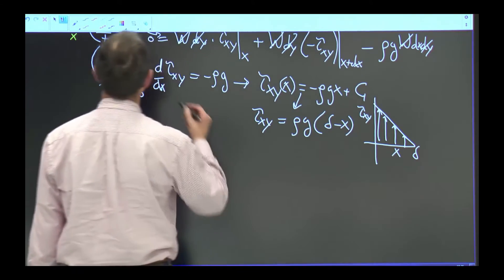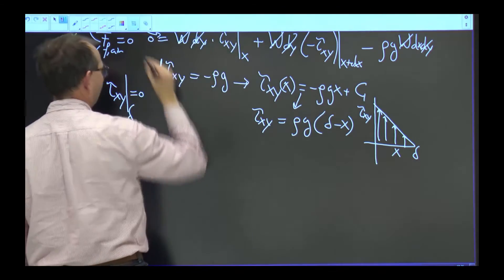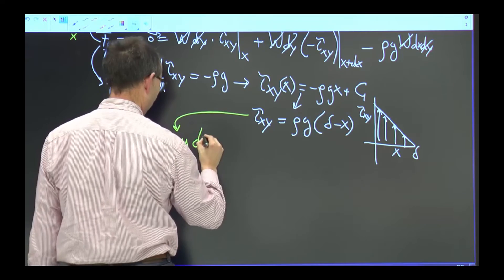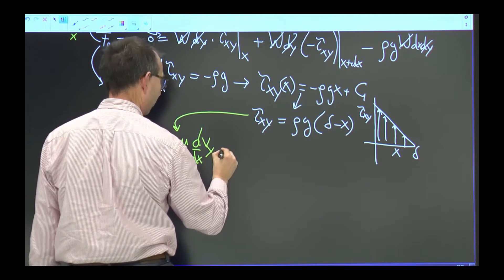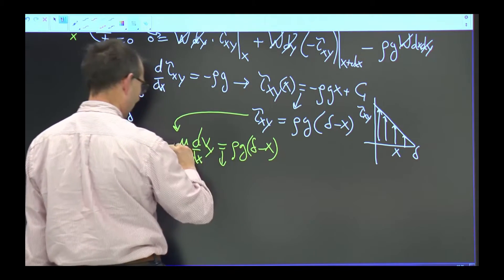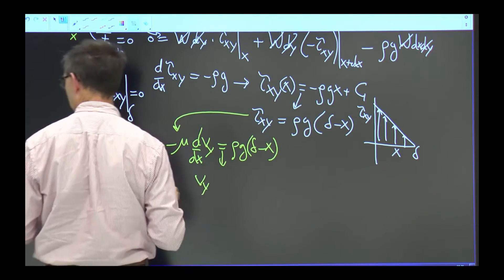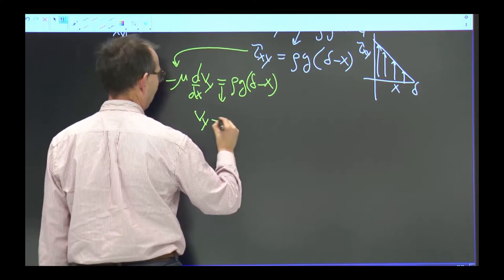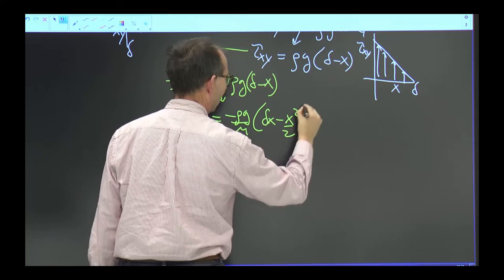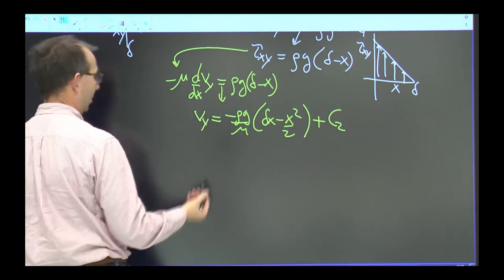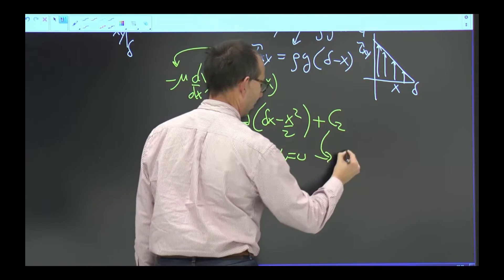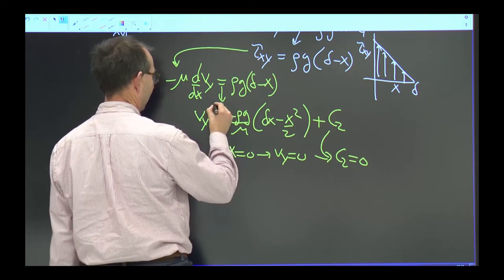Now I can use Newton's law for Newtonian liquids: τ_xy equals minus μ times the derivative of the y-component of velocity, and that equals ρg(δ − x). This can be easily solved. Dividing by minus μ and integrating gives v_y equals minus ρg/μ times (δx − x²/2) plus a second integration constant. For that I need a boundary condition: at the wall there is the no-slip condition, v_y equals zero, so c2 is zero.